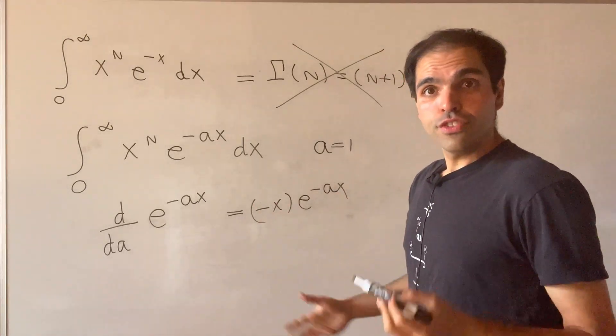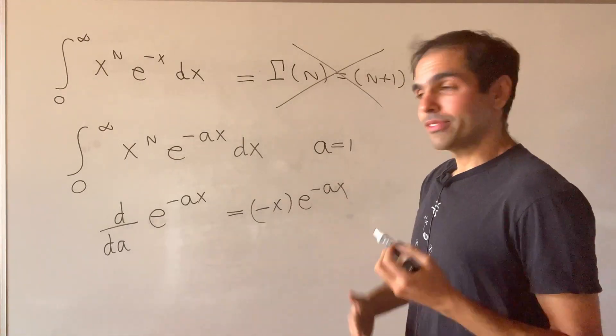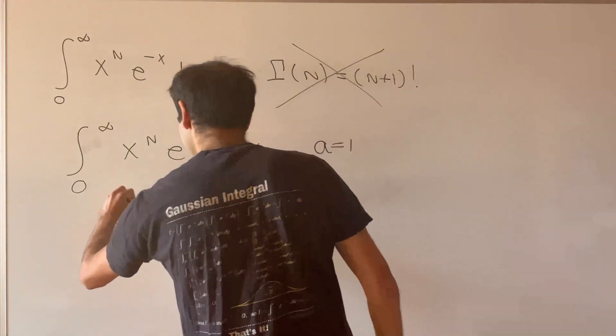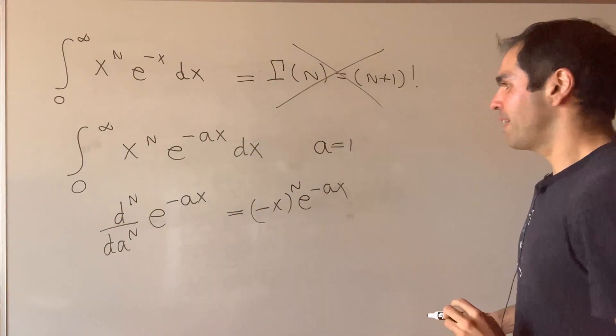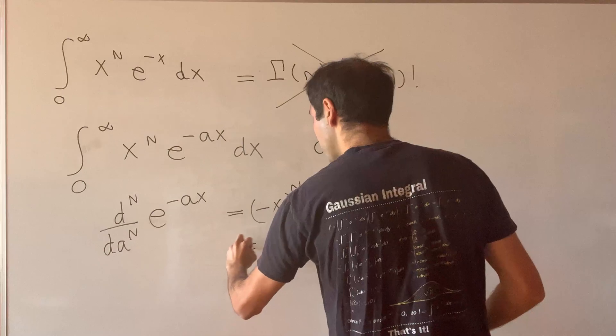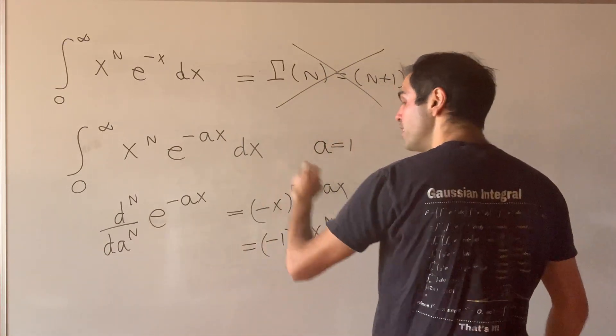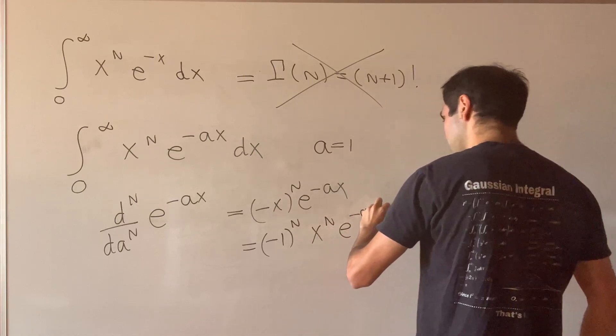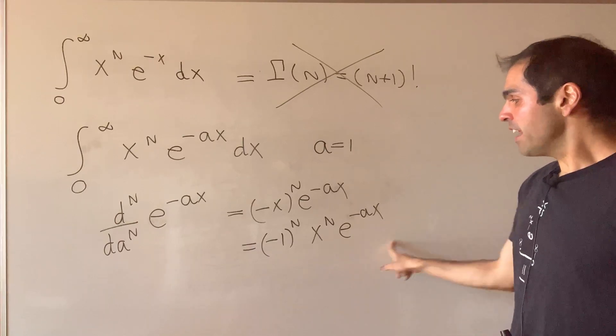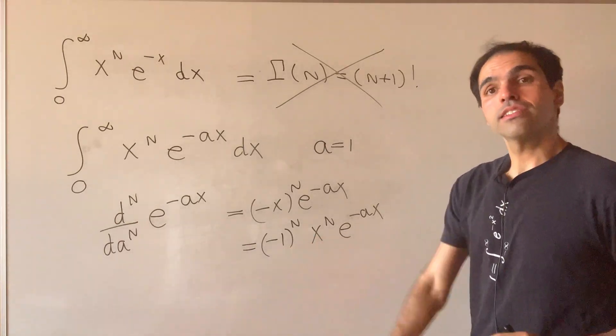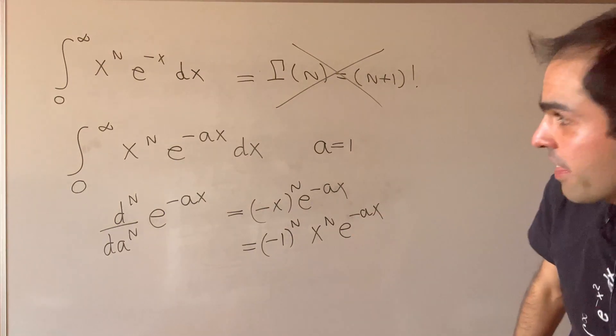Well, if you do it twice, then you get minus x squared times e to the minus ax. If you do it n times, then you get minus x to the n times e to the minus ax, which is precisely minus 1 to the n times the function in our integral. So x to the n times e to the minus ax is just minus 1 to the n times that nth derivative.